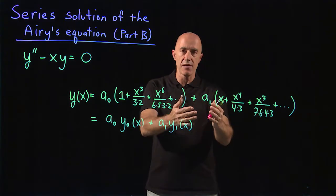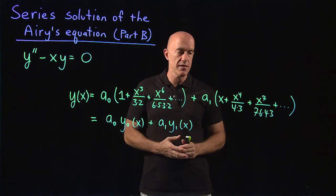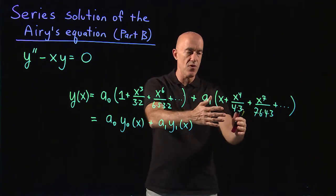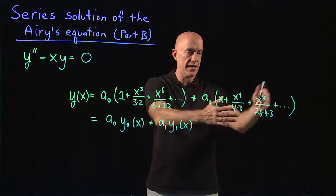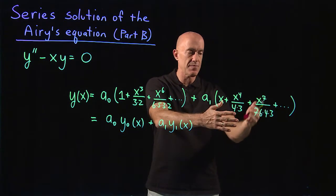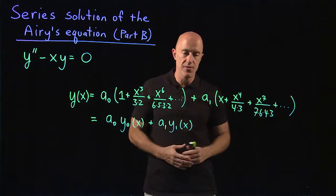The second series multiplied by the free constant A1: x plus x to the 4th over 4 times 3 plus x to the 7th over 7 times 6 times 4 times 3.